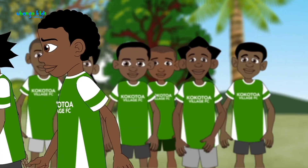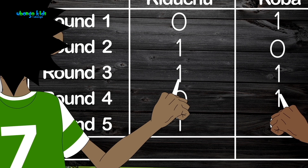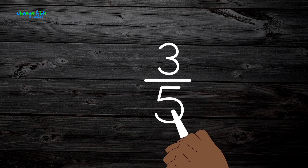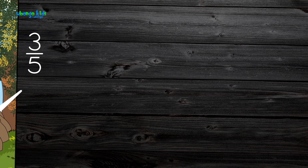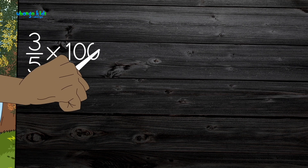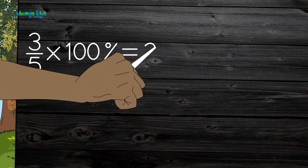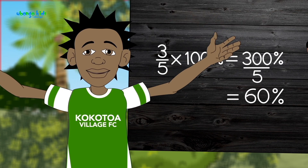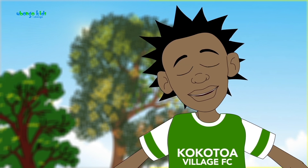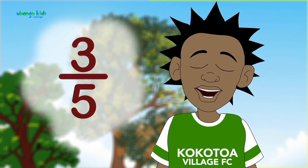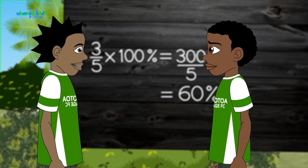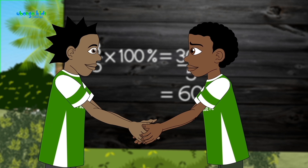The first one who can calculate their score as a percentage will be the winner and our captain. One plus one plus one is three. And I got three out of five — three fifths. What's that as a percentage? To get a percentage, I multiply by 100%. Three times 100 is 300, and 300 divided by 5 is 60. Sixty percent! You got three out of five. Koba, you got three out of five as well — that's also 60%. Kiduchu, you really are captain!